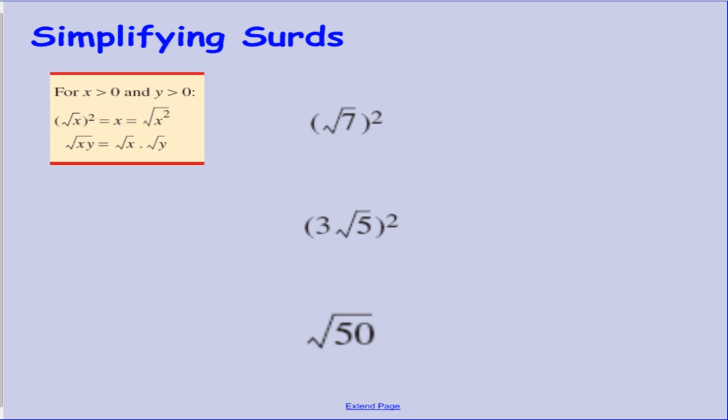The first thing we need to be able to do is simplify surds. In the little red box there we have a couple of definitions. Basically if you have the square root of a number and then you square it, or if you have a number, you square it and then you square root that number, those operations are the opposite of each other. So over here we have our first definition saying that multiplying a number by itself and square rooting it are the opposite operation and they will always give you the number you started with in the first place.